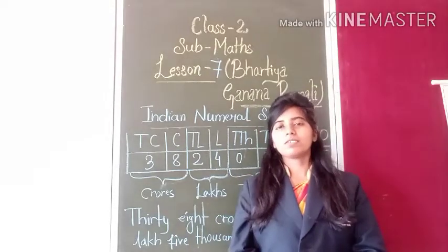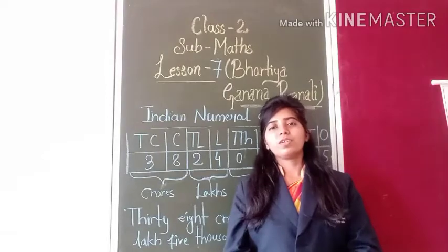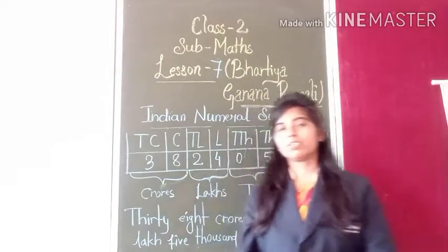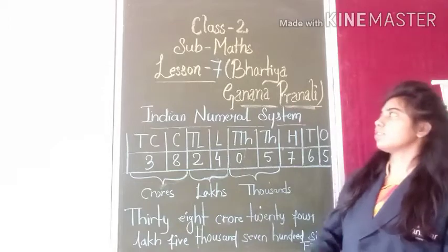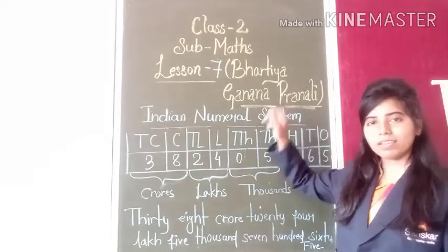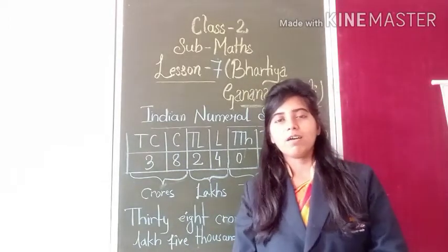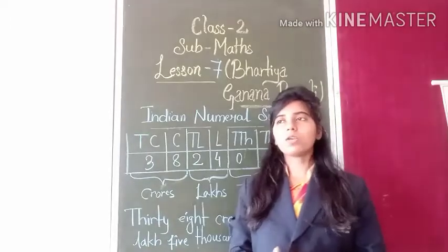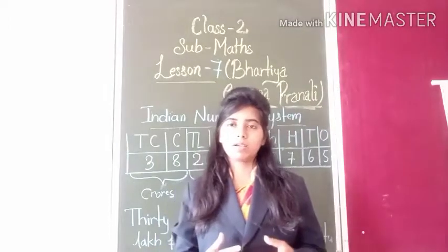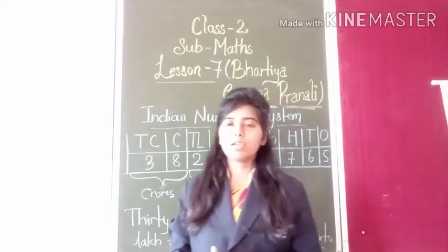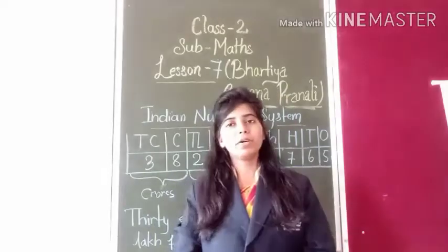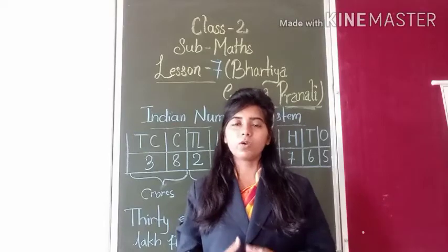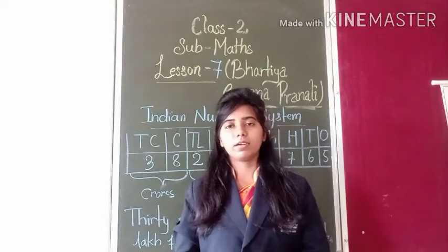Today we are going to learn our new chapter, Chapter 7. The topic is Bharatiya Ganana Pranali. We will learn how to make a Thalika (table) in the Indian numeral system — in number name and number. How can we maintain it in a Thalika?